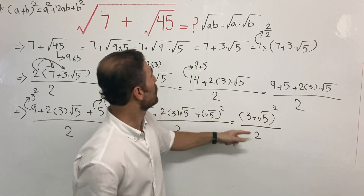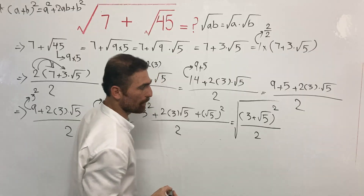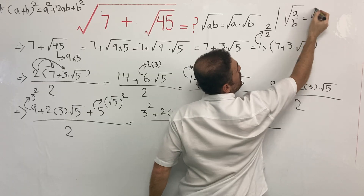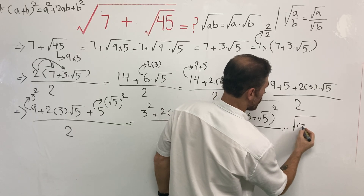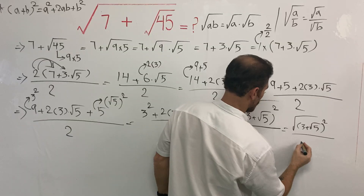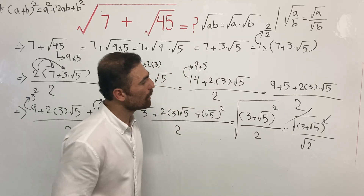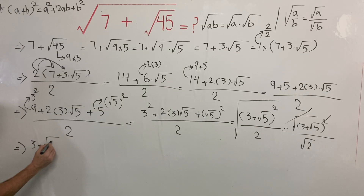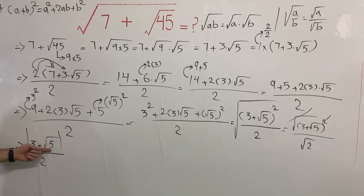But do not forget — this is only the inner part. We need to calculate the square root of this inner part, so we need a radical here. Using the rule that the square root of a over b equals the square root of a over the square root of b, we get the square root of three plus the square root of five squared, all over the square root of two. The square root and the square exponent cancel, giving us three plus the square root of five over the square root of two. Since three plus the square root of five is a positive number, no absolute value issue arises.